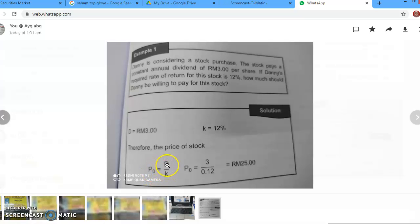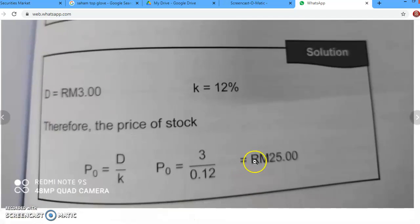D adalah dividend tadi dan bahagi dengan K required rate of return. Simple sahaja. So P0 akan equal to D adalah RM 3, RM 3 per share kita bahagi dengan 12%. So kita tukar dalam bentuk perpuluhan which is 0.12.